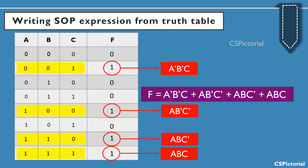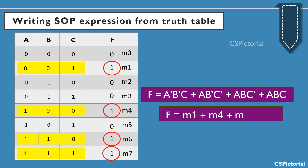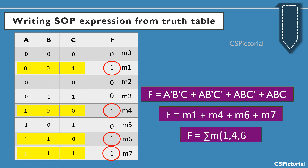We get the SOP expression as F = Ā·B̄·C + A·B̄·C̄ + A·B·C̄ + A·B·C. One more way to express an SOP expression is to write the corresponding min term representations for which the output value is 1. Here F = M1 + M4 + M6 + M7, which can also be written as F = Σm(1, 4, 6, 7).